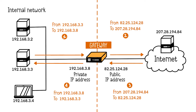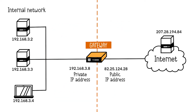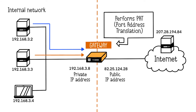To external observers, all requests appear to come from the same IP address — the gateway's IP. But what if there were simultaneous demands for external communication? How does the gateway manage return communication? It does this through PAT, or Port Address Translation, when it receives communication.